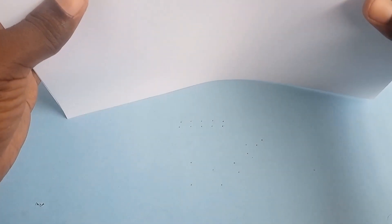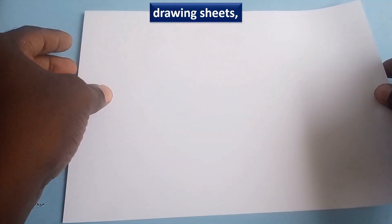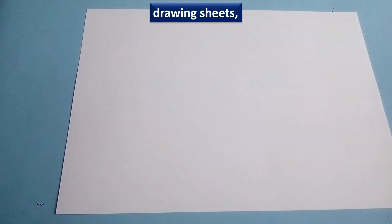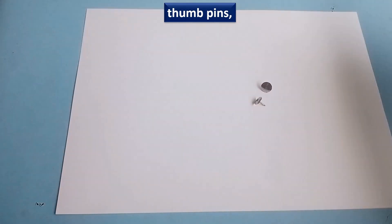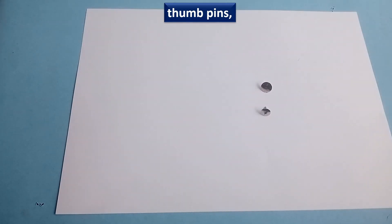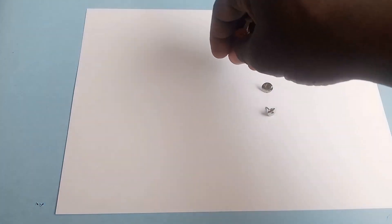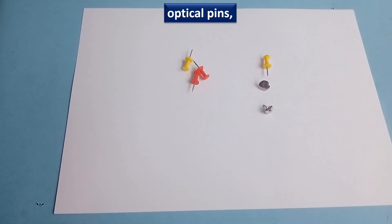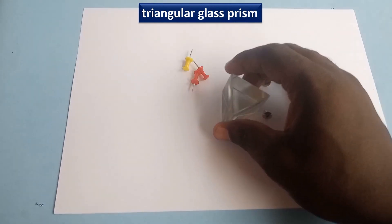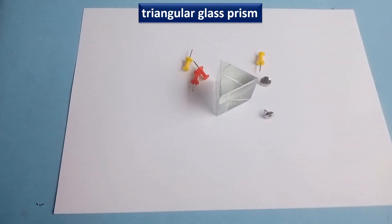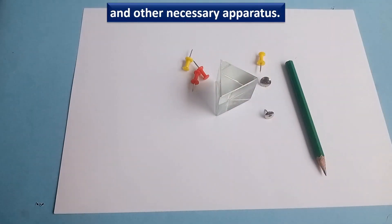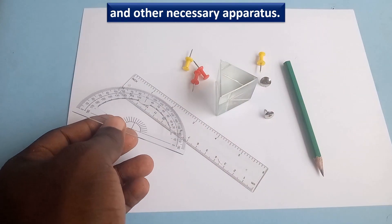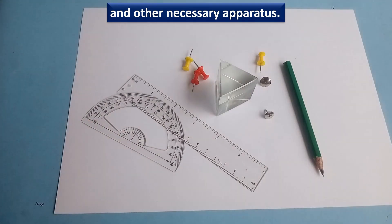You have been provided with a drawing board, drawing sheets, thumb pins, optical pins, triangular glass prism, and other necessary apparatus. You need your own pencil, ruler, and a protractor for this experiment.